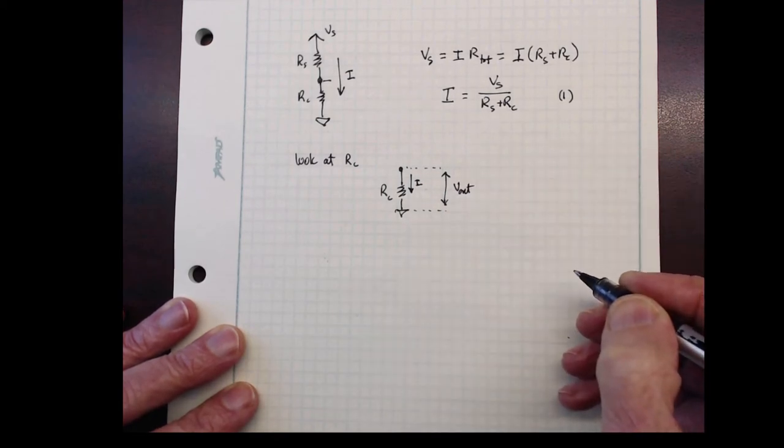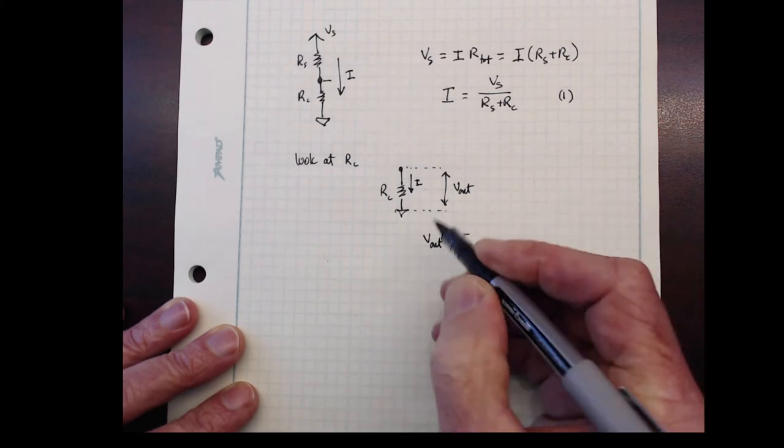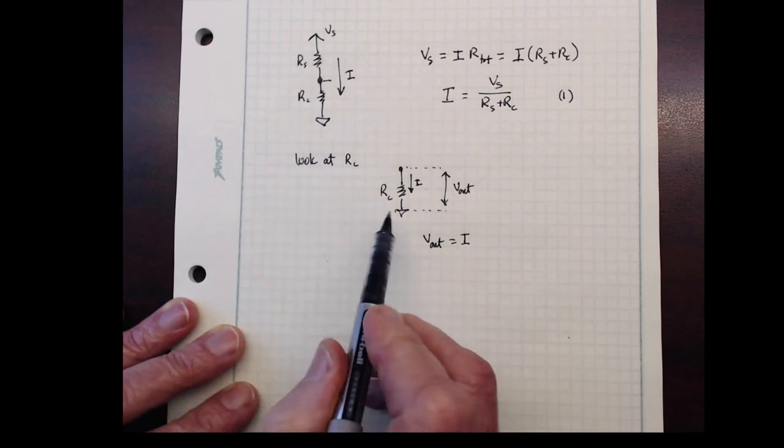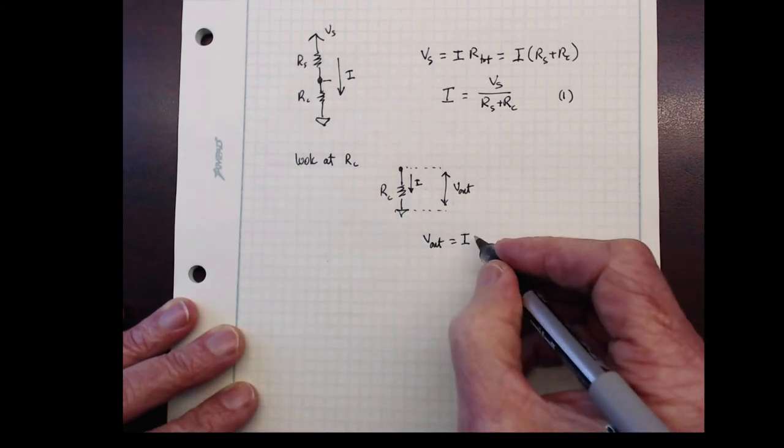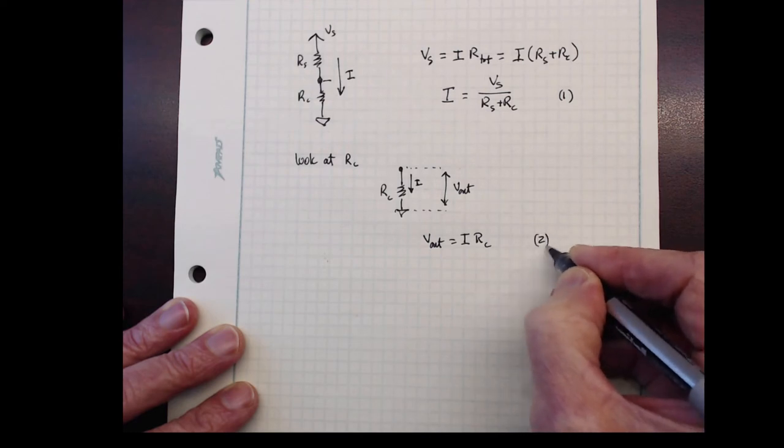So apply Ohm's law one more time. V out equals the current, which is the total current flowing all the way from V source, same here, times RC. So this is, we call this equation two.